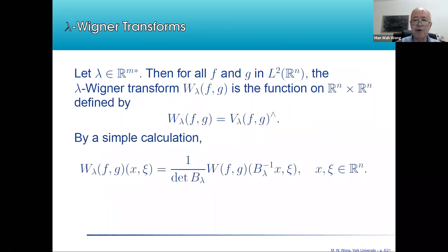It is an easy exercise to check that this Lambda Fourier-Wigner transform of F and G at Q and P is just the ordinary Fourier-Wigner transform of F and G evaluated at the transpose of B Lambda at Q, and P is unchanged. All these are calculations.